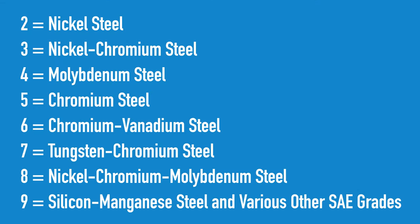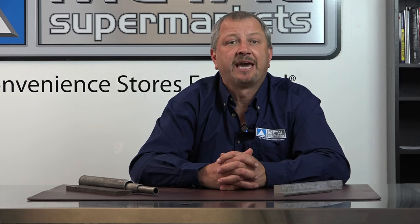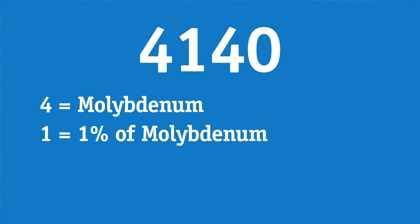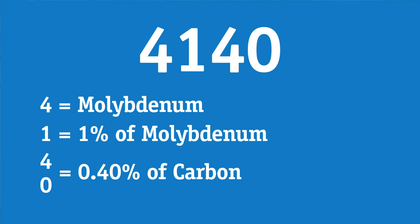Remaining alloy steels under the SAE or AISI systems are classified as shown. Generally, but not always, the second digit in the series indicates the concentration of the major element in percentiles. The last two digits indicate the carbon concentration to 0.01%. So 4140 indicates a molybdenum alloy steel containing 1% of molybdenum and 0.40% of carbon.